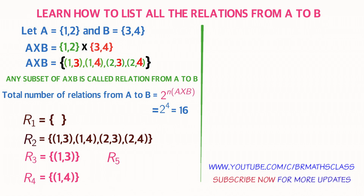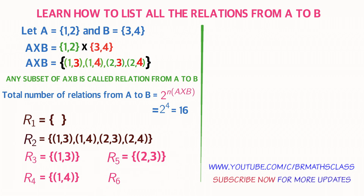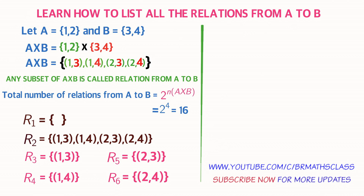Similarly, R5 has only one element, ordered pair (2,3). R5 is a subset of A cross B, so R5 is a relation from A to B. R6 contains only ordered pair (2,4). R6 is a subset of A cross B, so R6 is a relation from A to B. Observe that relations R3, R4, R5, and R6 each contain only one element.